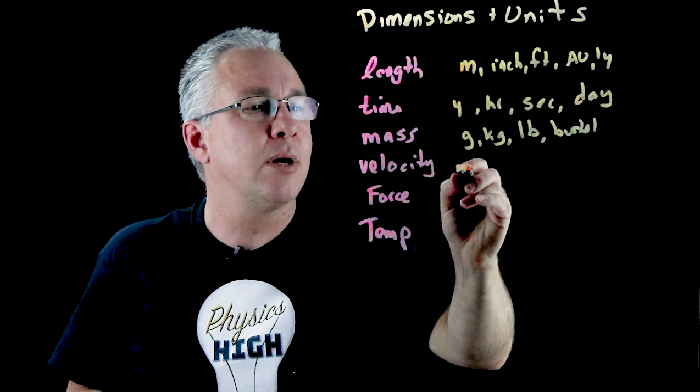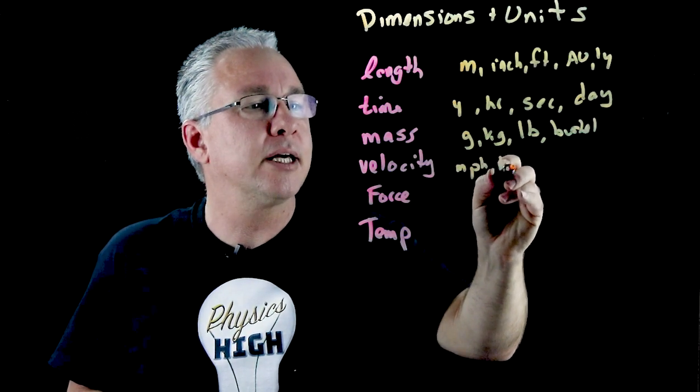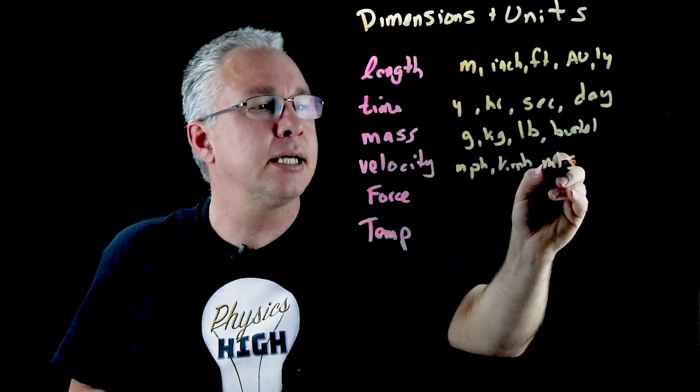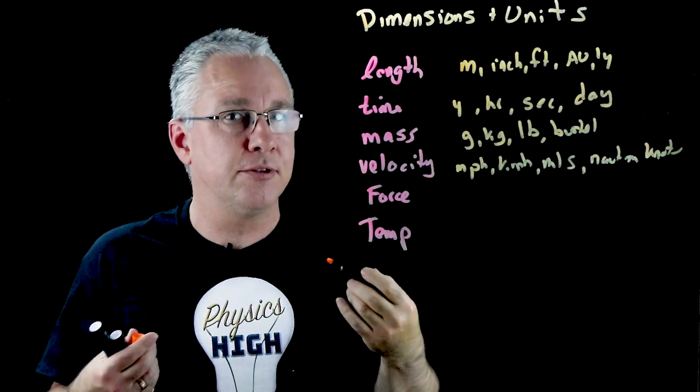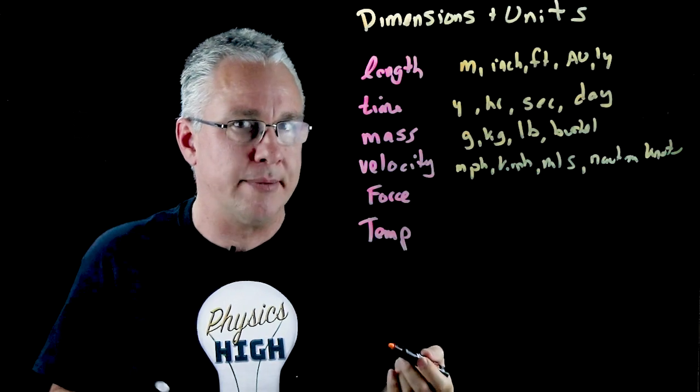What about velocity? Well we have miles per hour, obviously we have kilometers per hour, we have meters per second, we have knots. Again a whole bunch of ways of determining or describing velocity.